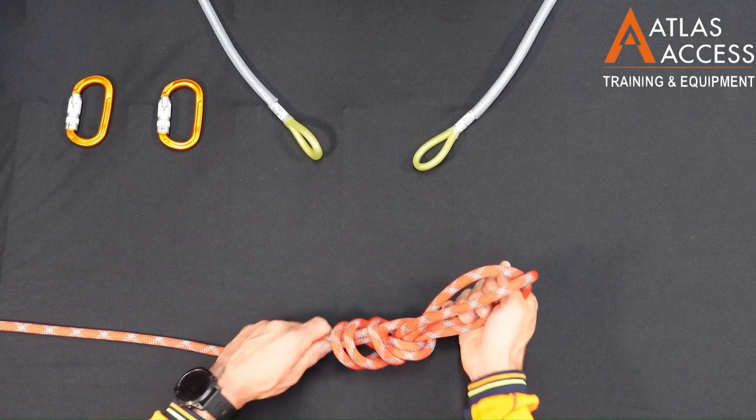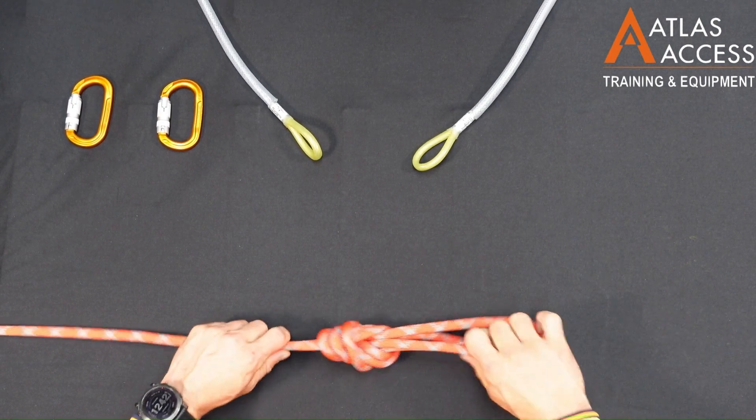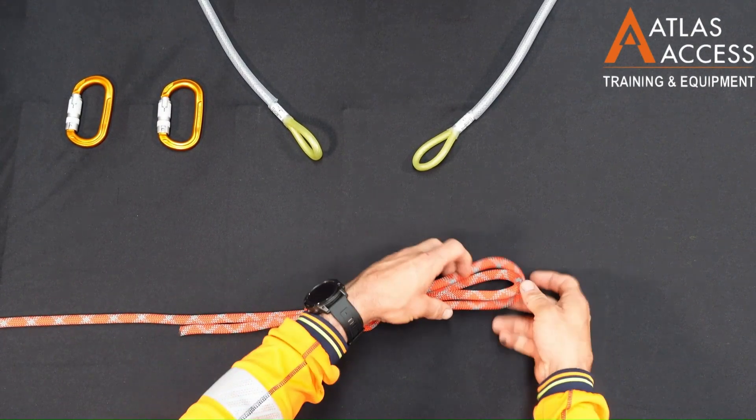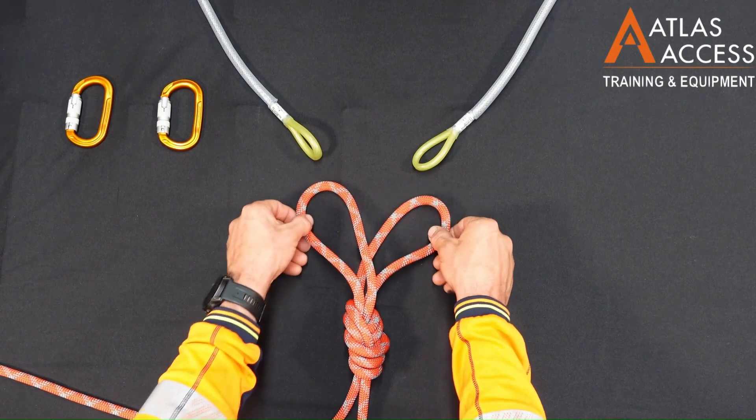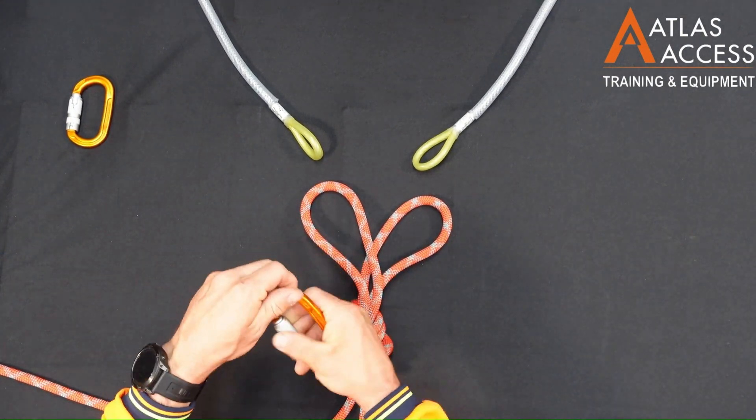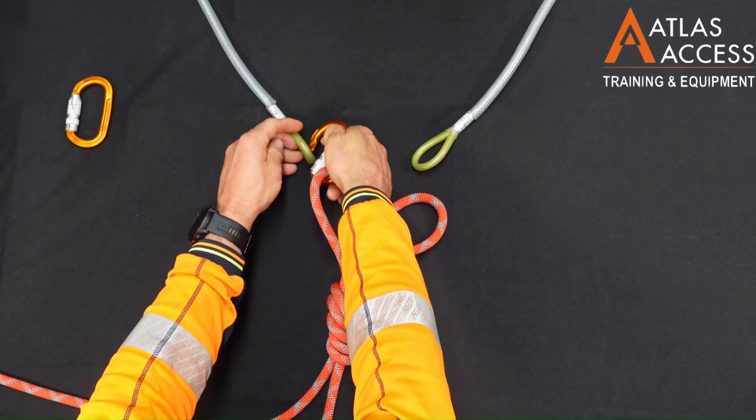Gently pulling this tight, making sure there are no crossovers, we should end up with two equal length loops at the end. We can clip each of these loops into two different anchors.